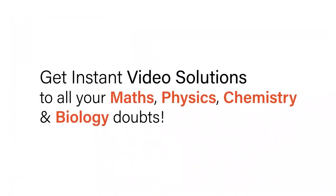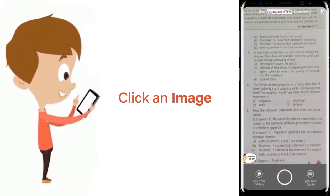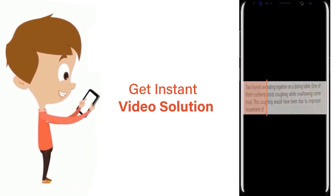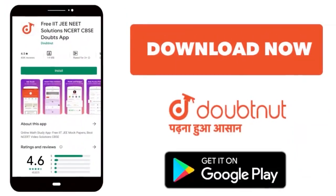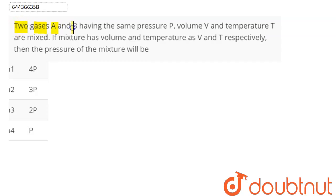With Doubtnet, get instant video solutions to all your maths, physics, chemistry, and biology doubts. Just click the image of the question, crop the question, and get instant video solution. Download Doubtnet app today. Question is: Two gases A and B...